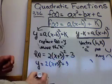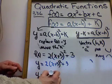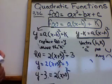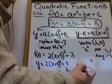Move the 3 over. y minus 3 equals 2 times x plus 5 squared. Now if I say to graph it, do you know the vertex?